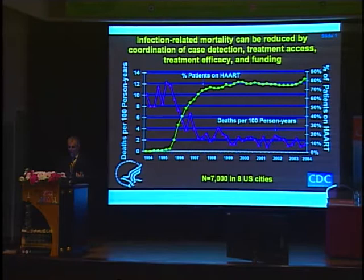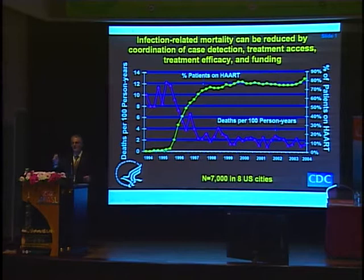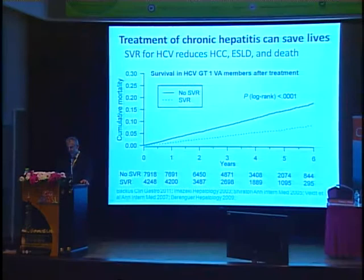So mortality on this axis and in the purple, and the advent of antiretroviral therapy and its uptake into the population. So even at the population level, treatment saved lives — lesson number one. Now, with viral hepatitis, we have proof of principle that treatment saves lives as well.